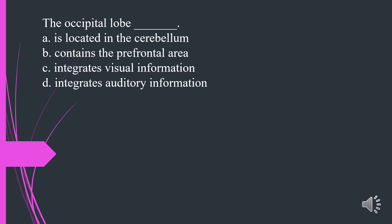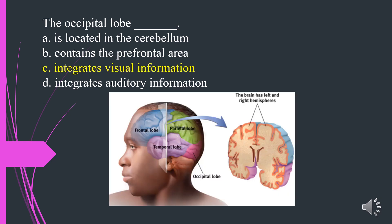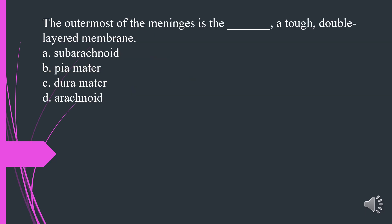The occipital lobe: A. Is located in the cerebellum. B. Contains the prefrontal area. C. Integrates visual information. D. Integrates auditory information. The answer is C. Integrates visual information.